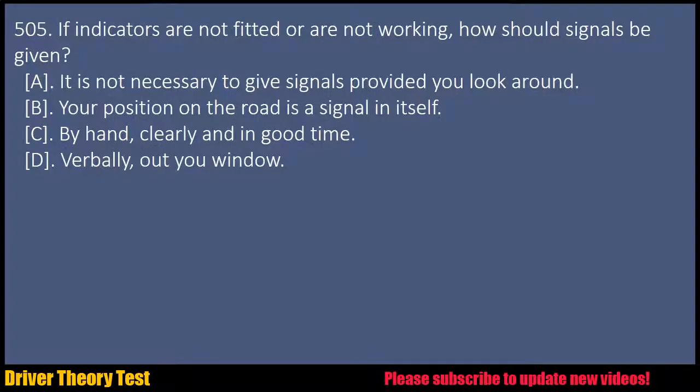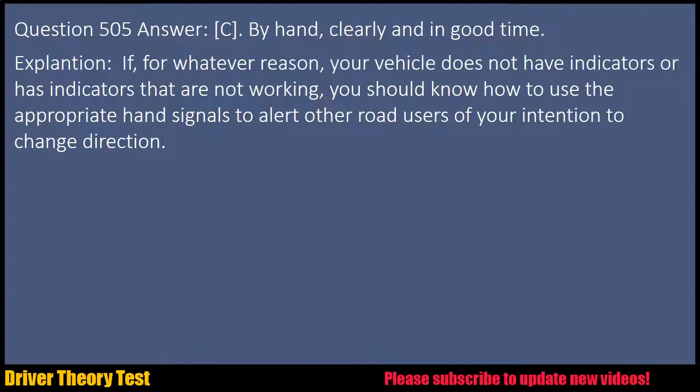Question 505: If indicators are not fitted or are not working, how should signals be given? A. It is not necessary to give signals provided you look around. B. Your position on the road is a signal in itself. C. By hand, clearly and in good time. D. Verbally, out your window. Answer: C. By hand, clearly and in good time. Explanation: If, for whatever reason, your vehicle does not have indicators or has indicators that are not working, you should know how to use the appropriate hand signals to alert other road users of your intention to change direction.